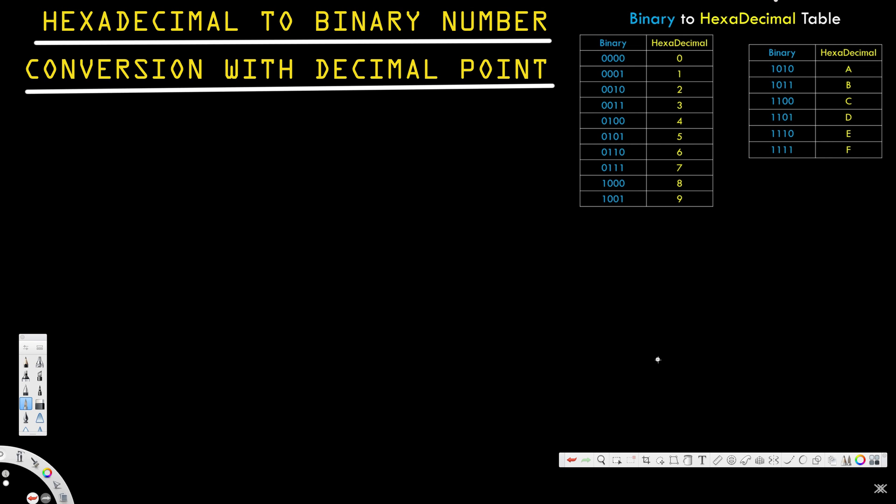Hey guys, in this video we are going to see how to convert a number from hexadecimal to binary. Here is the table for the conversion - binary to hexadecimal. You have 16 different values. If we know this table, it's easier to convert. Now let's look at an example.